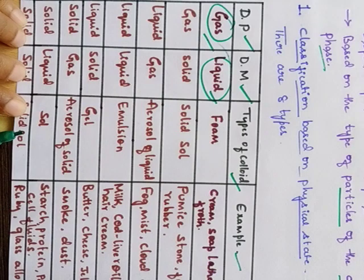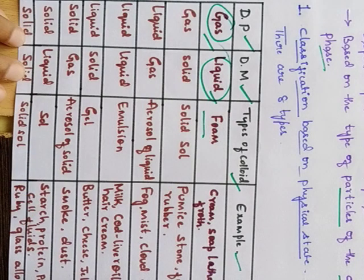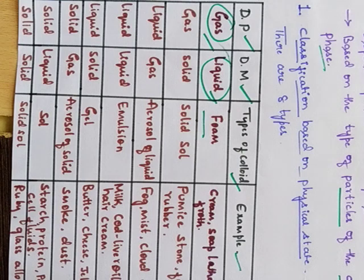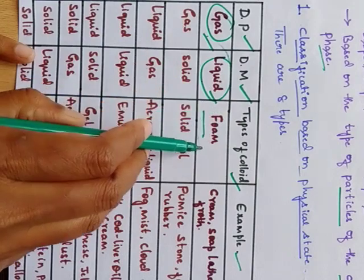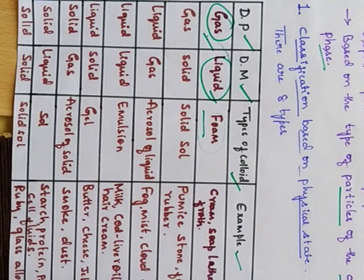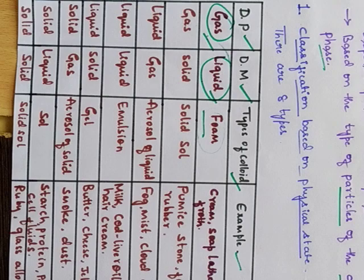When a gas is mixed into a liquid, the colloid formed is called foam. A familiar example is soda water, where carbon dioxide gas is forcibly mixed with water. When you look at the soda bottle you can't see the gas and liquid separately — it looks homogeneous. But when you shake and open the bottle suddenly, you get a fizzing sound along with a thick foam, which is due to the presence of gas inside the liquid.